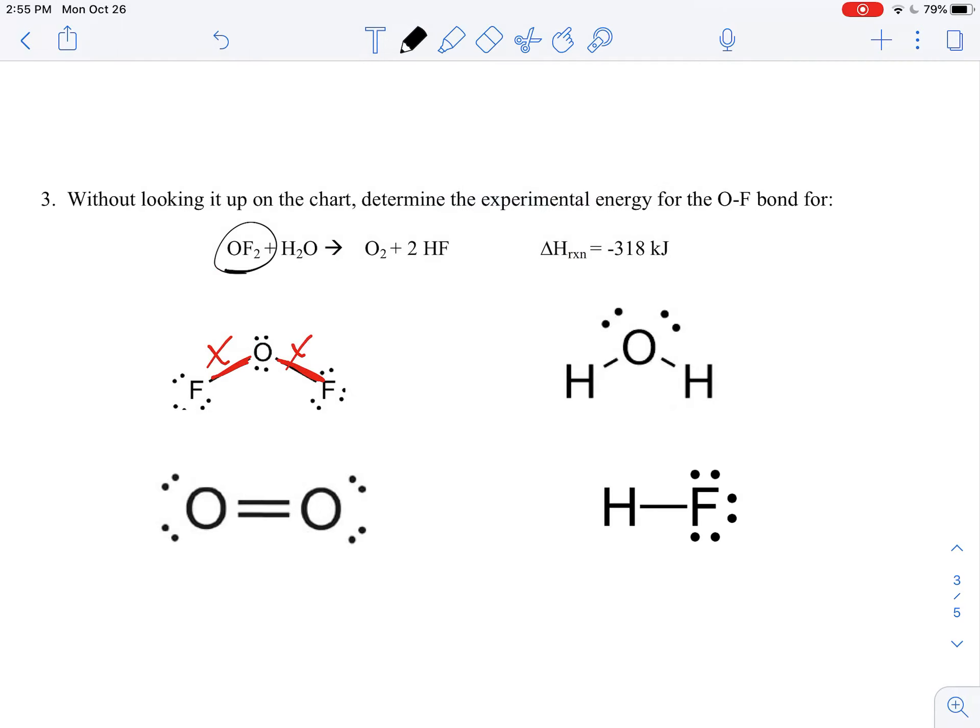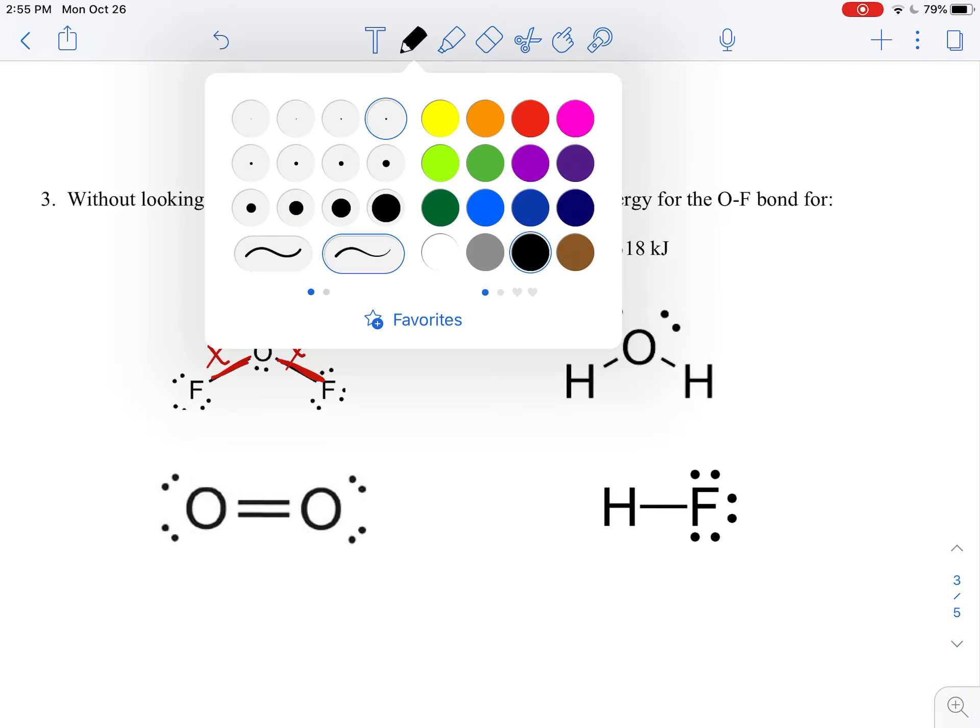So now I've got water - we know the Lewis dot structure for that, but we can look it up: it's 464 and 464 there. And over here I've got an oxygen, so if I look this guy up on the chart that's 498.